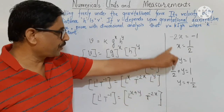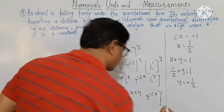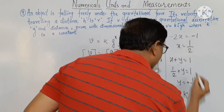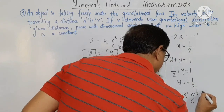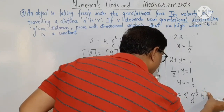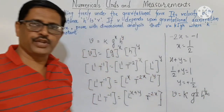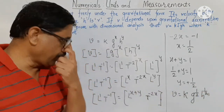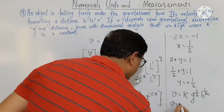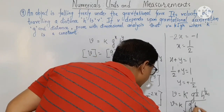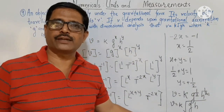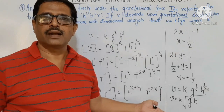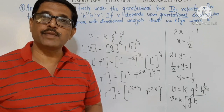Knowing x equals 1/2 and y equals 1/2, the equation for velocity becomes v equals k times g raised to 1/2 times h raised to 1/2, which can be written simply as v equals k times the square root of g into h. This is the formula derived using dimensional analysis.